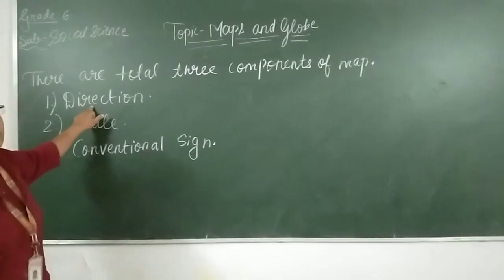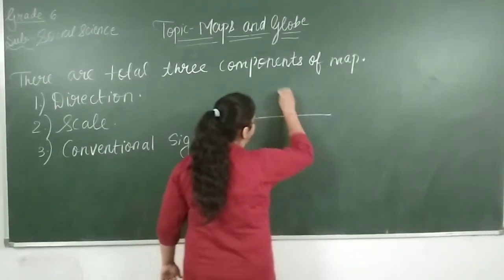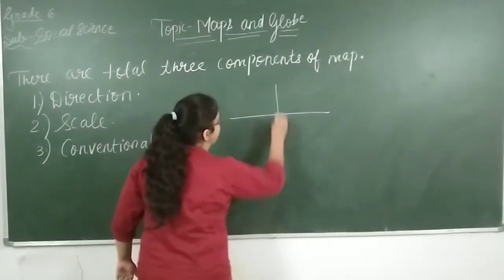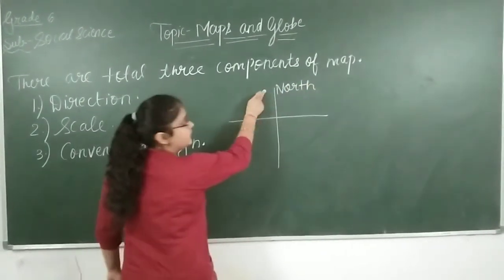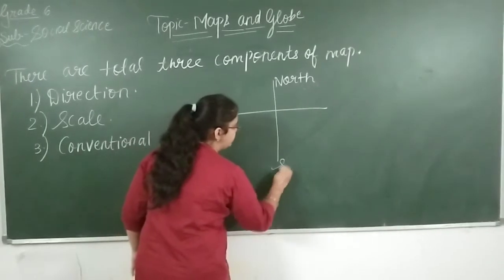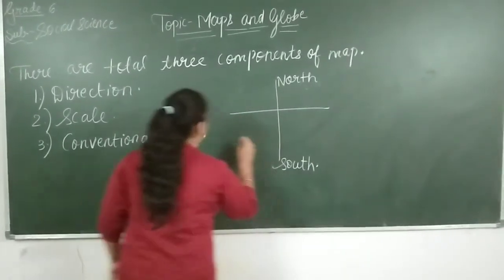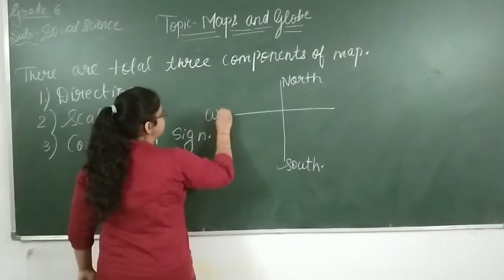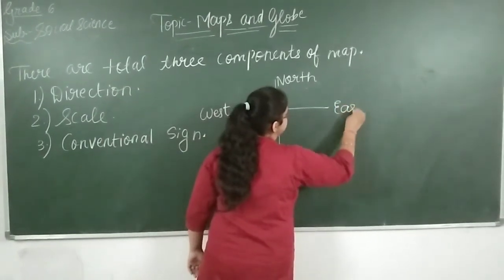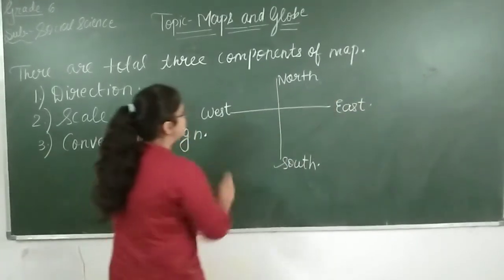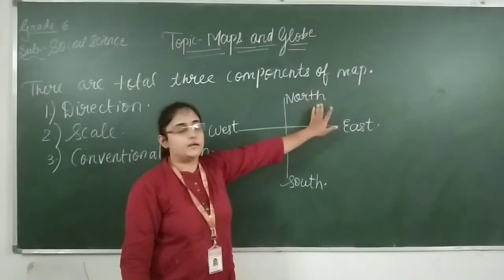Direction. The four main directions are: north at the top side, south at the bottom side, west at the left-hand side, and east at the right-hand side. These are the four main directions and they are called cardinal directions.